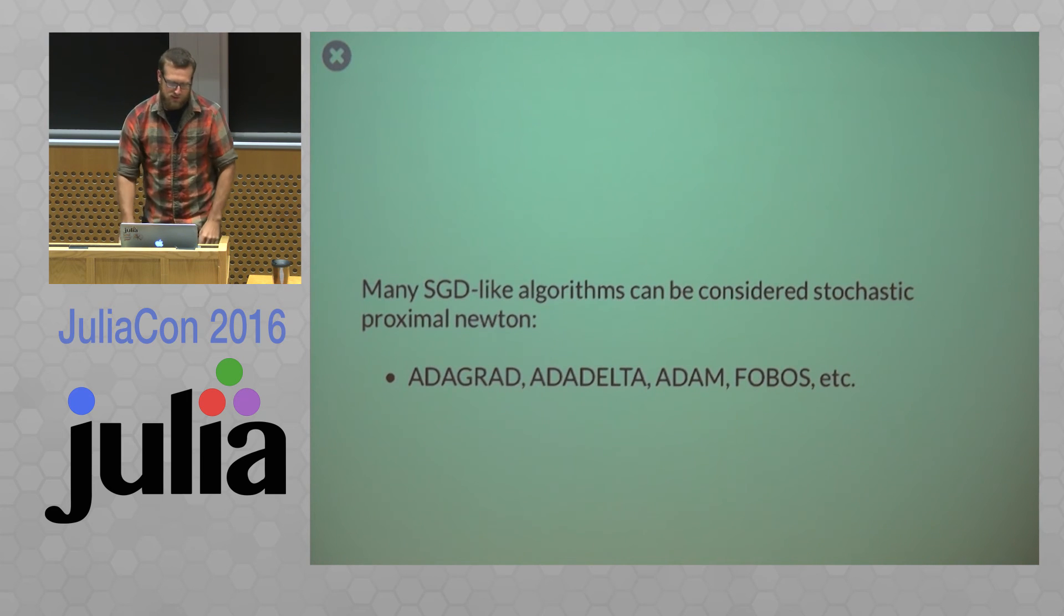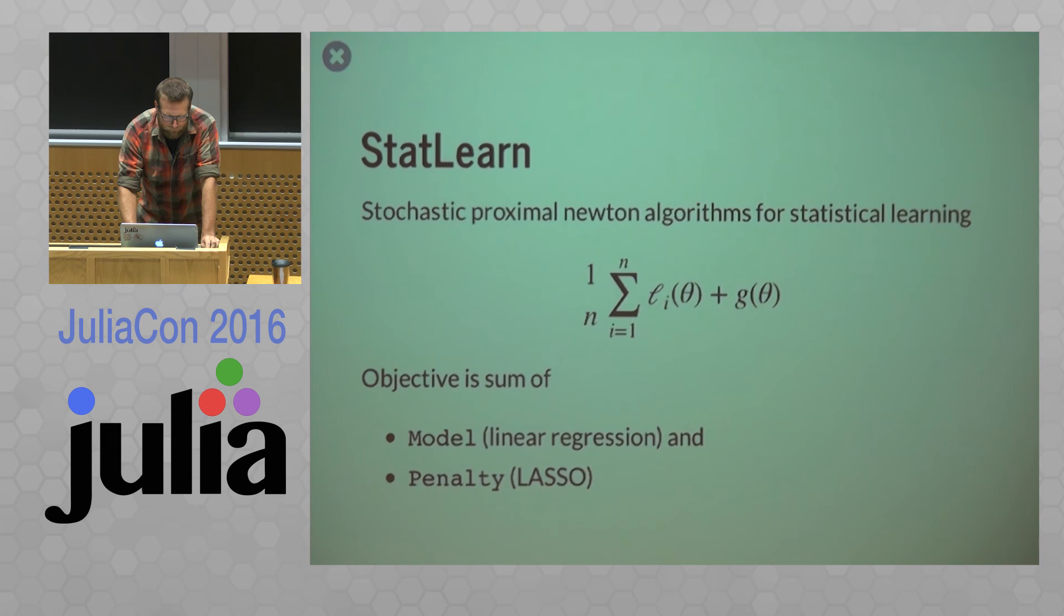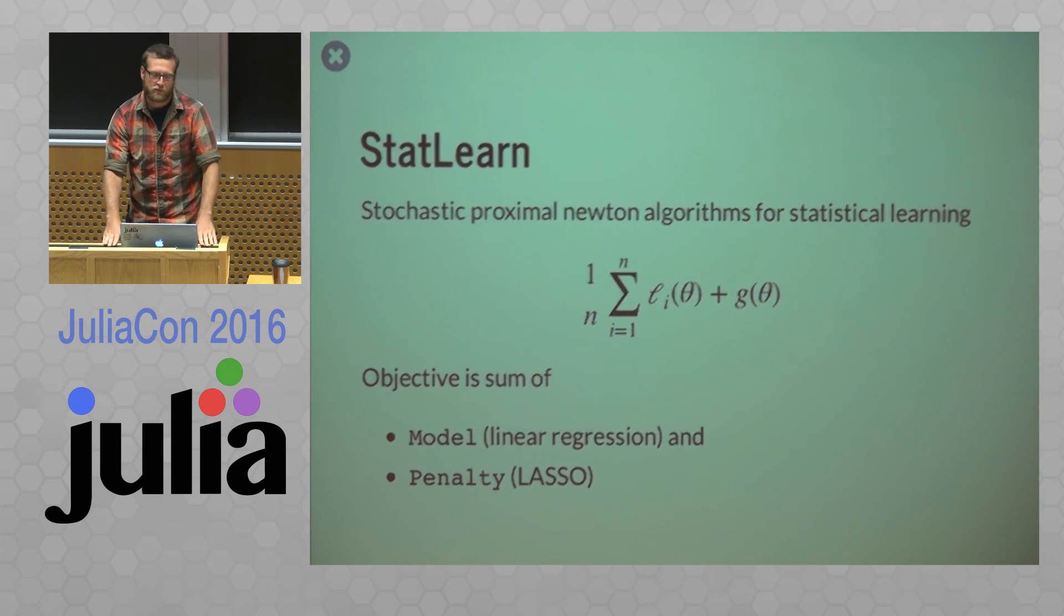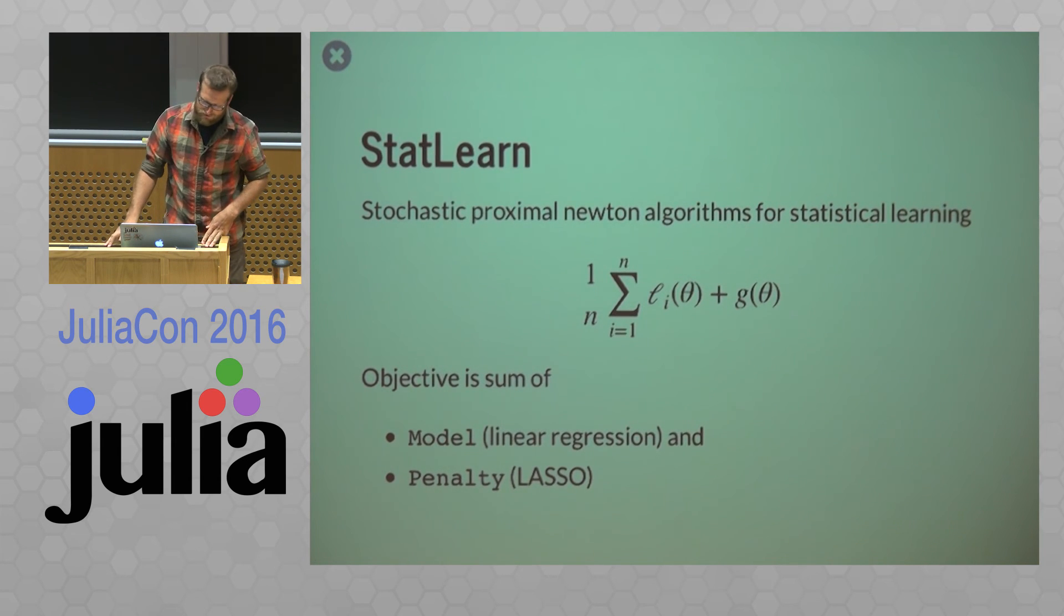So many SGD-like algorithms can be considered stochastic proximal Newton. So some of the popular recent ones are AdaGrad, AdaDelta, Adam, Phobos, and all those ones are essentially stochastic proximal Newton.